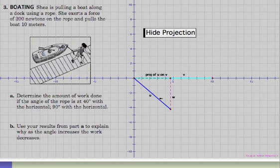This vector U is the girl's force on the rope, 200 newtons. You can see the projection of U on V in the direction of the boat is going to be less than 200 newtons. So let's see how we would solve that.